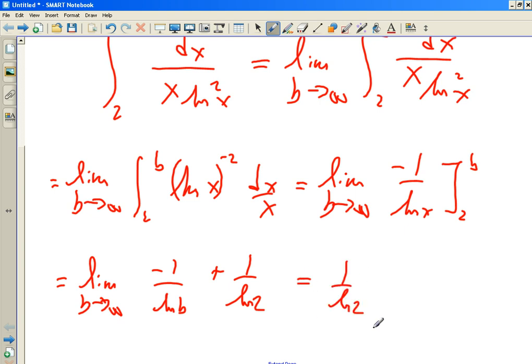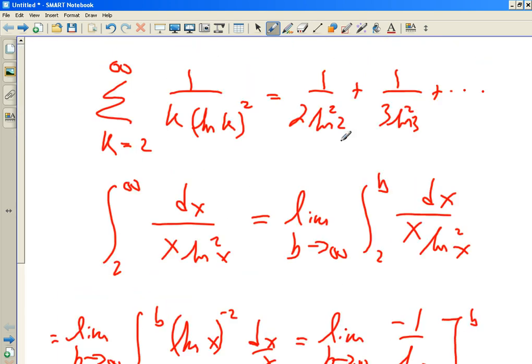So let's say that's the limit as B goes to infinity of, let's see, ln to the negative 1 over negative 1 is negative 1 over ln, isn't it? Evaluated from 2 to B. All right. So let's do that. The limit as B goes to infinity of negative 1 over ln B minus a negative 1 is plus 1 over ln 2. All right. So does that limit exist? If it exists, so does the series converge. If the improper integral does not exist, so does the series diverge.